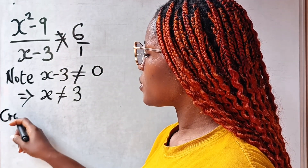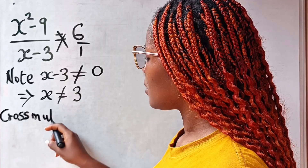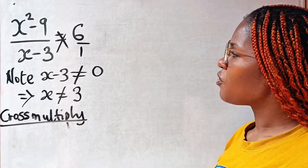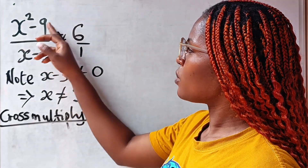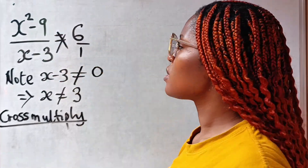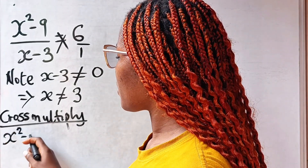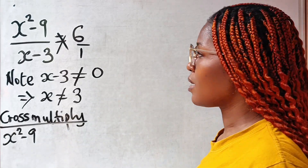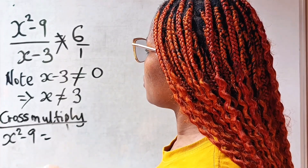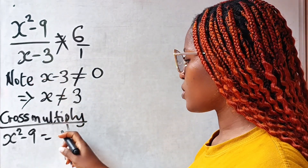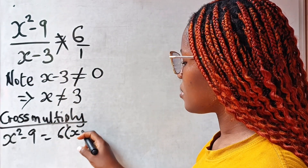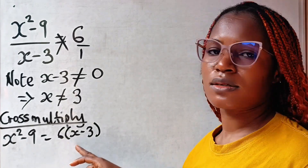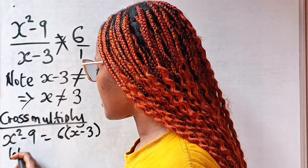Looking at this particular equation, let's cross multiply. So cross multiplying, we have x squared minus nine equal to one. That is, x squared minus nine multiplied by one gives us x squared minus nine, equal to six multiplied by x minus three.